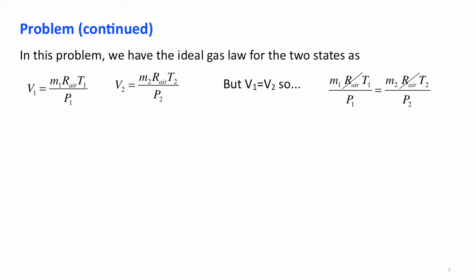Of course, the gas constants for air cancel out. Now, we were also told that the temperature remained constant as we added mass to this container. So, this reduces to M1 over P1, M2 over P2.